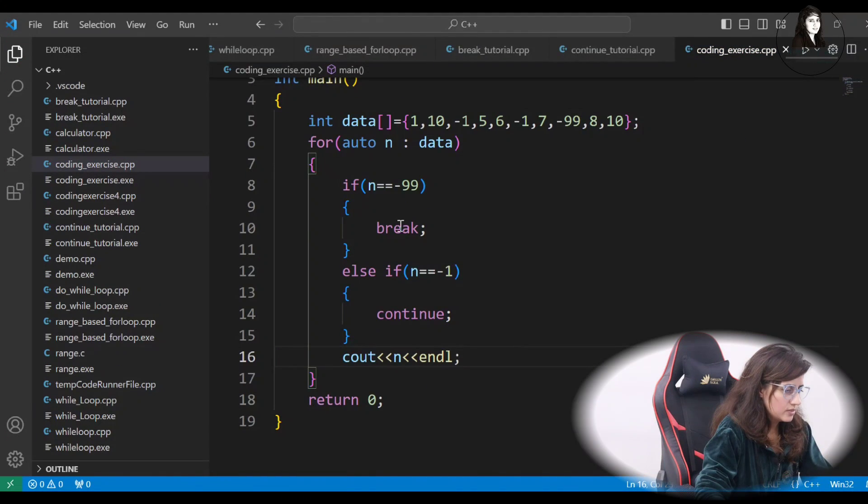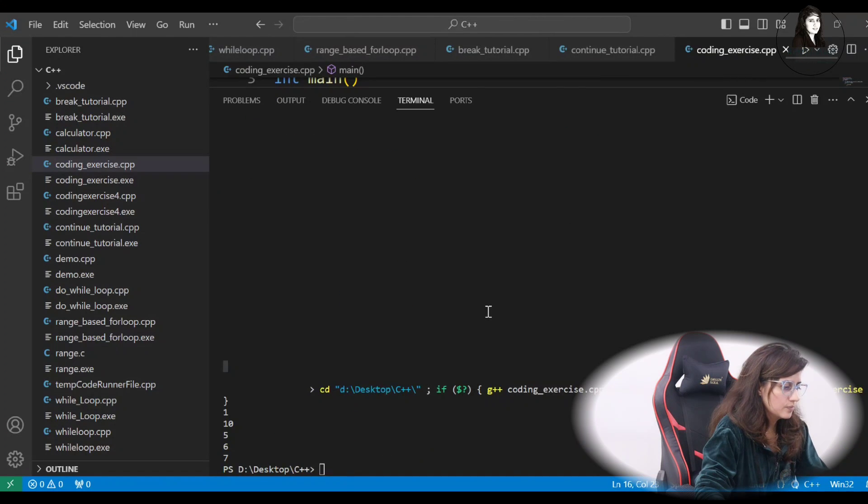So, I think this is simple one. We have used break, continue and range-based for loop. Let's run this. I hope it will work. See, 1, 10, 5, 6, 7. And that's exactly what we want.